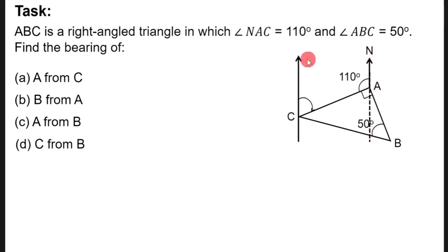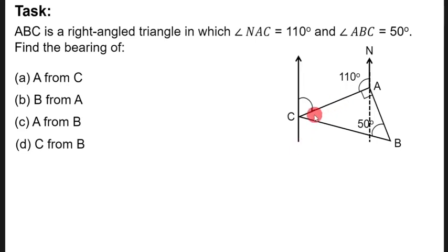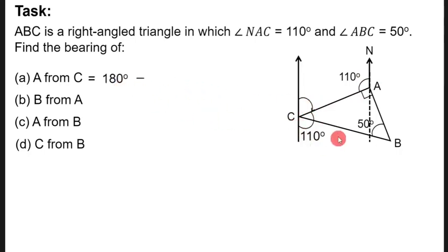We can extend this line to create two parallel lines. When two parallel lines are joined by a transversal, alternate angles are equal. So this angle must equal 110 degrees, the same as angle NSC. We can then find our required angle by saying 180 minus 110, which gives us 070 degrees.